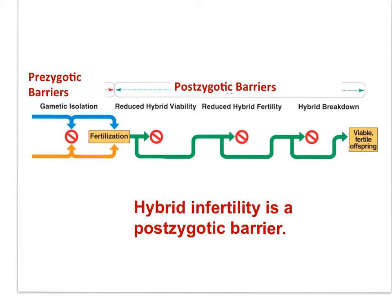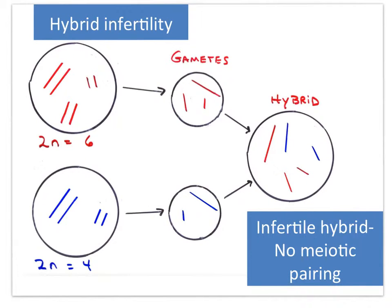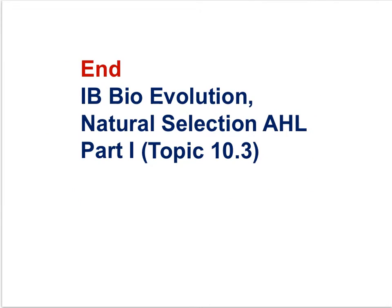This is an example of a post-zygotic barrier in the formation of new species. We have different species with different numbers of chromosomes, but otherwise closely related, that mate to produce viable offspring — the mule. But with an odd number of chromosomes, homologous pairing during gamete formation in the hybrid is not possible. Thus the hybrid is infertile — hybrid infertility. This is a post-zygotic barrier.